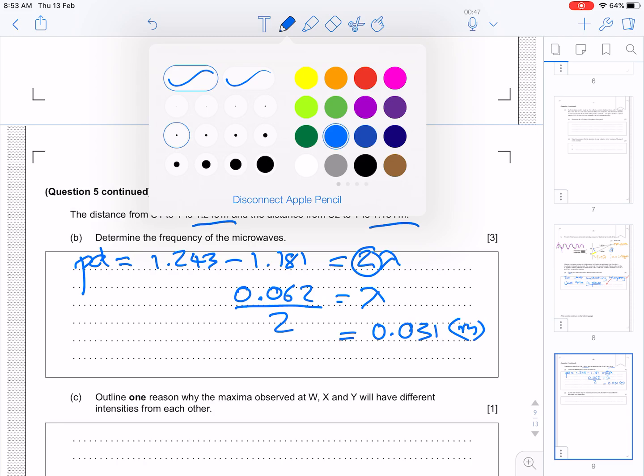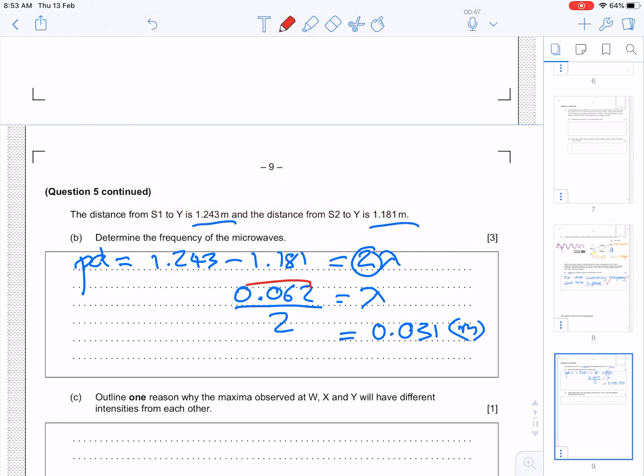And we get one mark for identifying the path difference is 0.062. That's a mark. And we get one mark for the wavelength being 0.031.